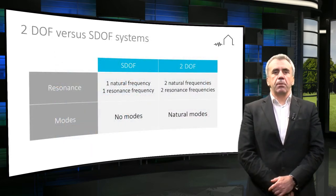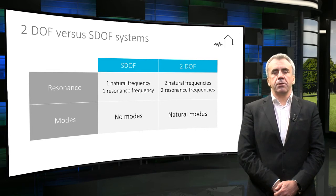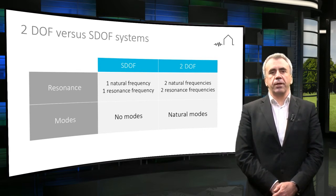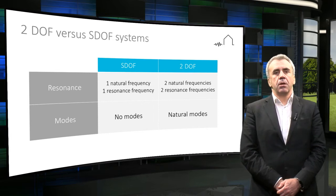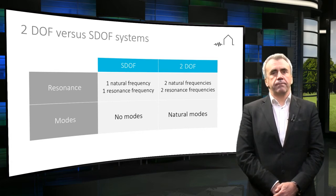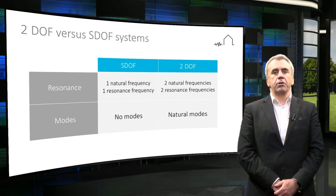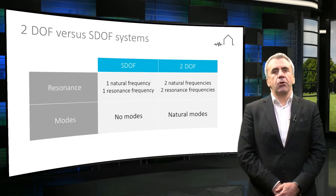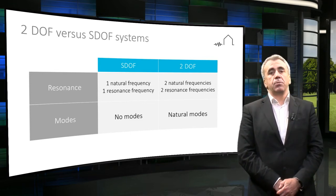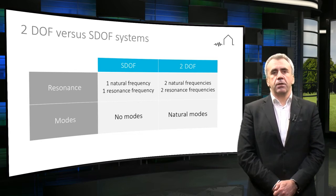This slide summarizes the main fundamental differences between a single degree of freedom system and a two degree of freedom system. These differences are: first, the presence of two natural frequencies in the two degree of freedom system, and consequently two frequencies of the base motion that can cause resonance; second, the existence of distinct shapes of vibration for the two degree of freedom system that correspond to those two natural frequencies. The latter property leads to a strong dependence of displacement and, very importantly, stress distribution in the structure on the excitation frequency.